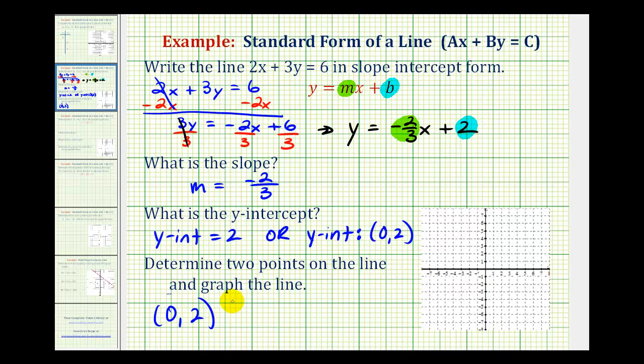And then to determine the second point, let's go ahead and graph the line and then pick a point from the line. So we'll start by plotting the y-intercept of positive 2 here on the y-axis.